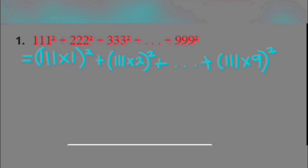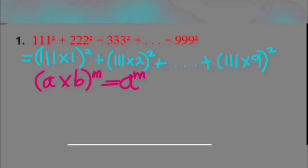There are 9 terms in the expression that we want to simplify. The law of exponents and powers we're going to introduce is the fact that when we have a product like A times B, and the product is altogether raised to an exponent, it is going to be A to the exponent M multiplied by B to the exponent M. It is called the power of a product, one of the laws of exponents and powers.